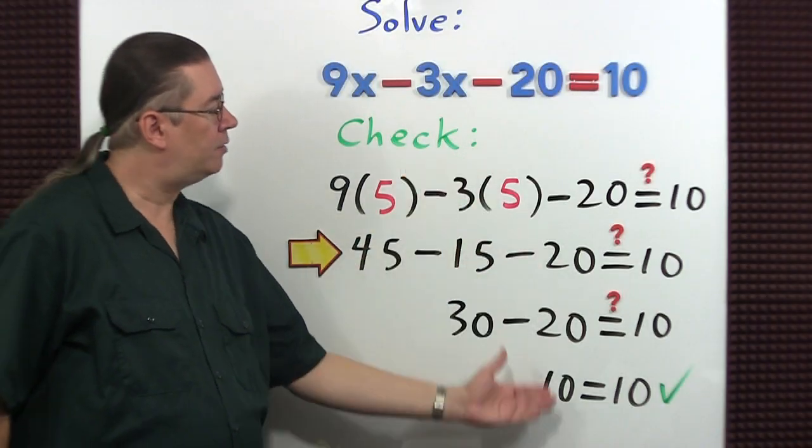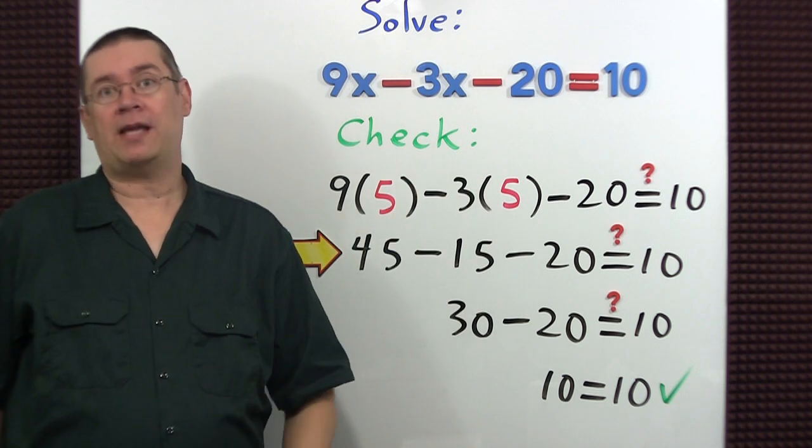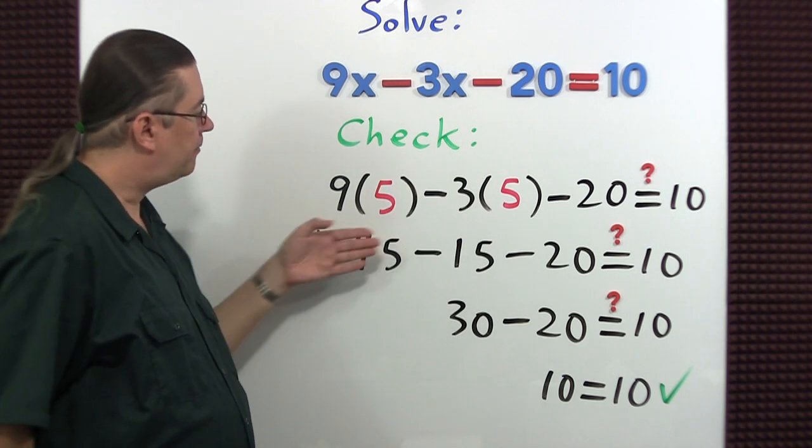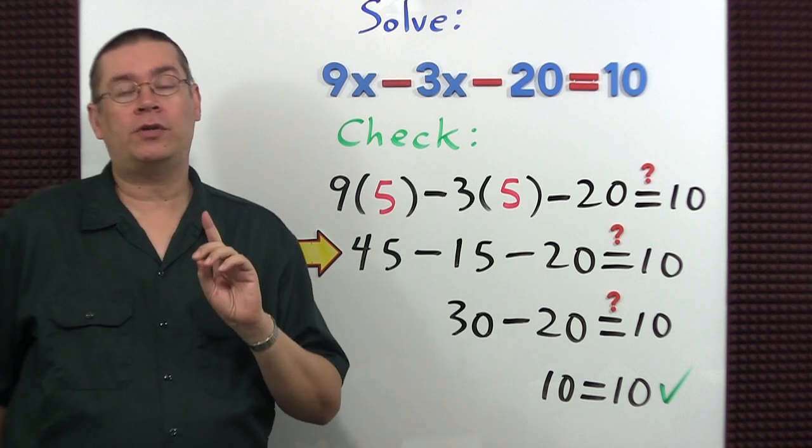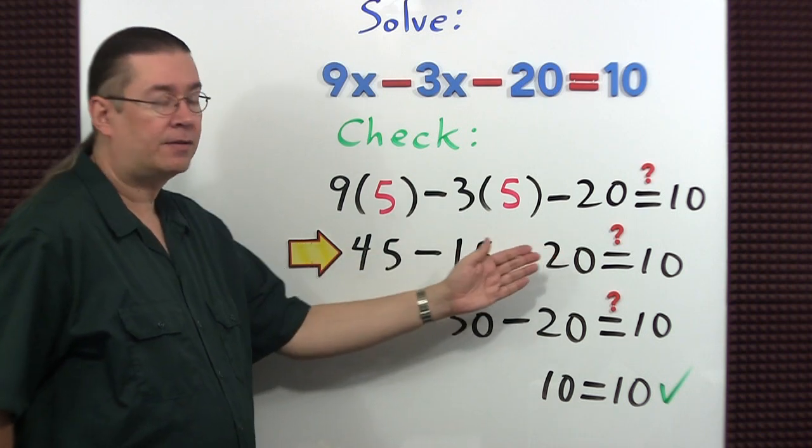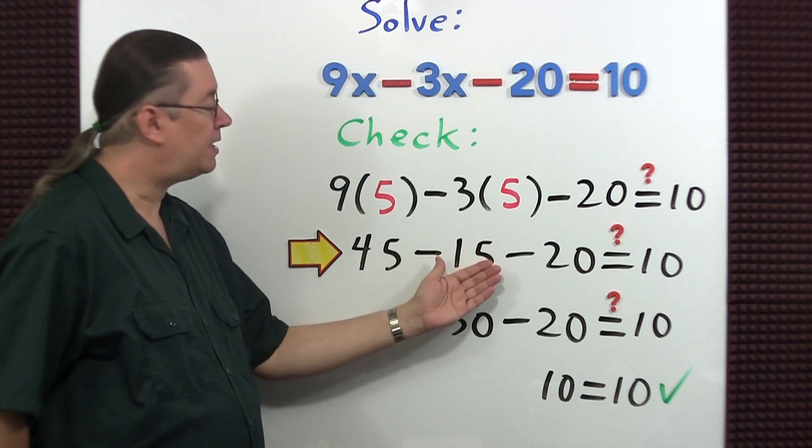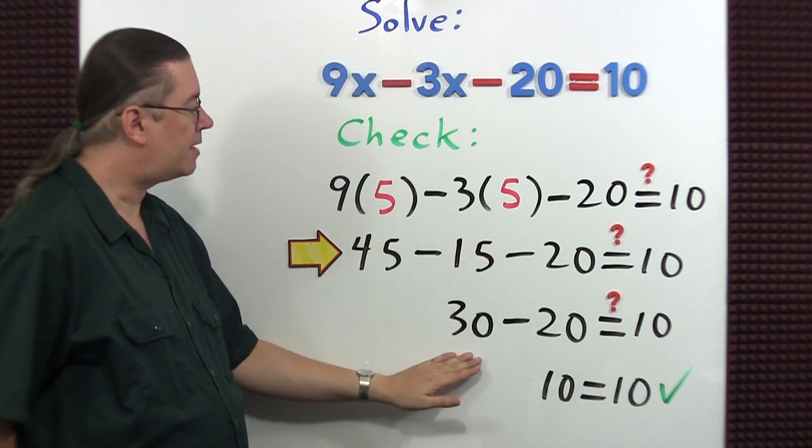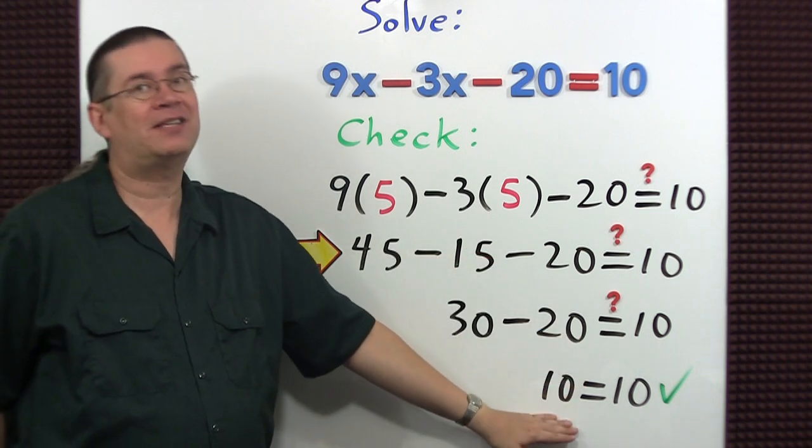Here's the check of our solution. I do want to point something out to you. Here in the second step, I only have subtractions. So according to our order of operations, you must go from left to right. Go ahead and perform 45 minus 15 first to get 30. Then subtract the 20 to get the 10.